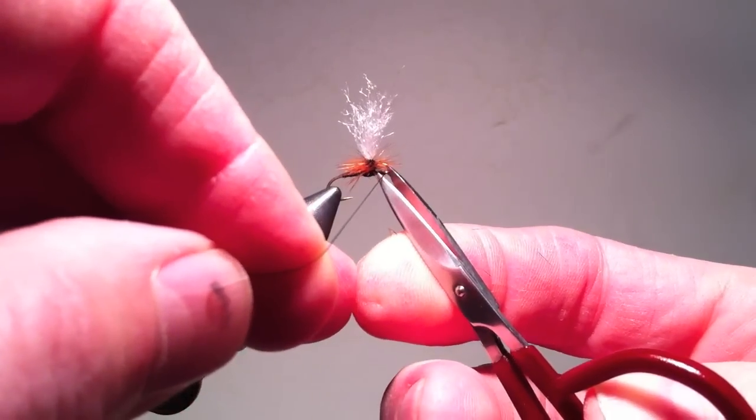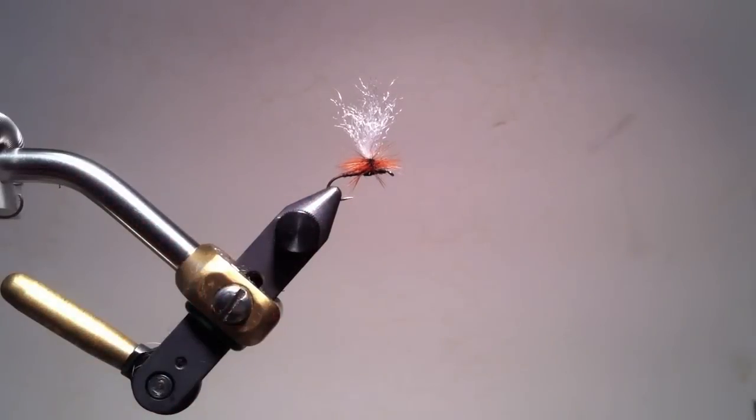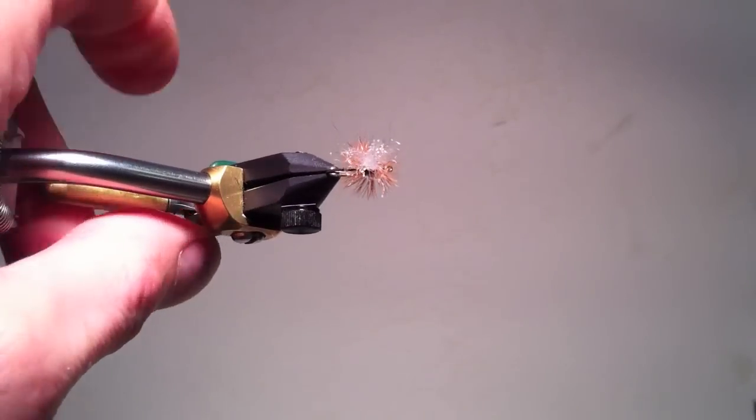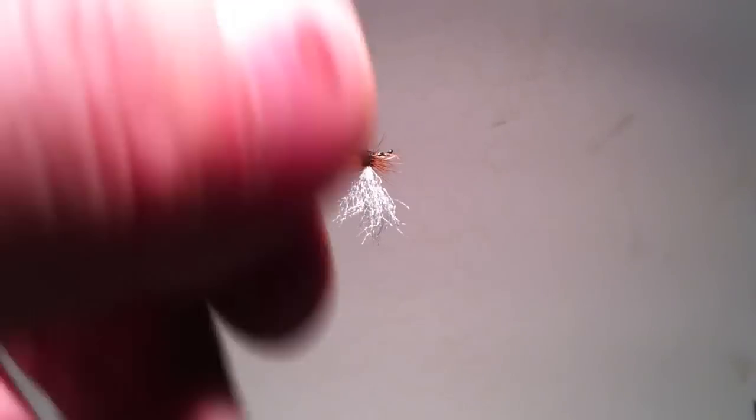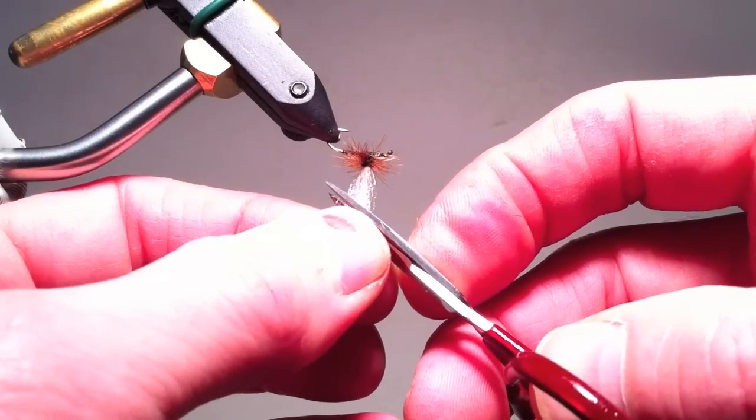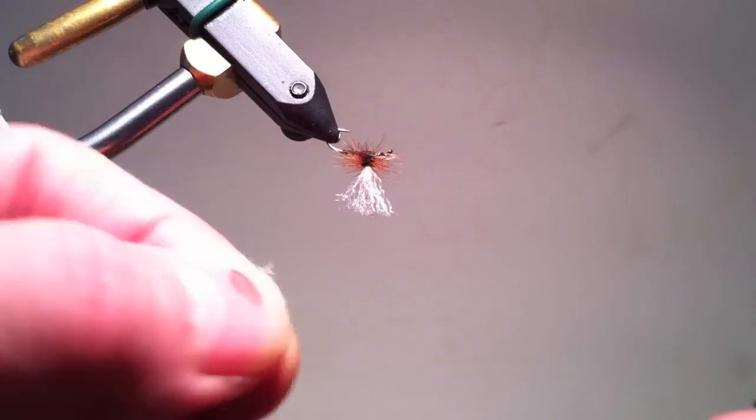Once I have my thread clipped, I need to cut the length of the post. Again, I find this easier by using the rotary vise to place the wing pointing down, and then clip it to the length that I want, and trim for any particular shape.